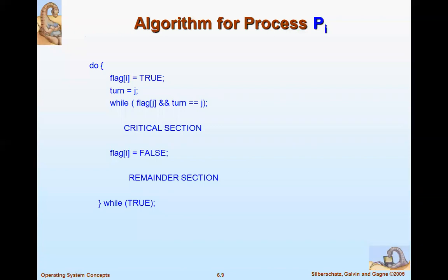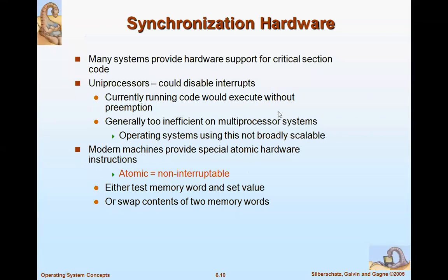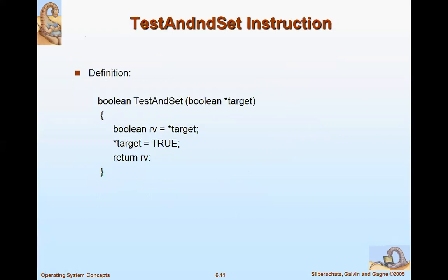Now we'll see the next solution — implementing synchronization using hardware. This is called synchronization hardware. Many systems provide hardware support for the critical section. For example, uniprocessors can disable interrupts so that currently running code executes without preemption, but this is generally too inefficient on multi-processor systems.